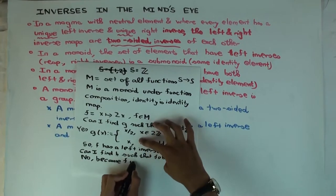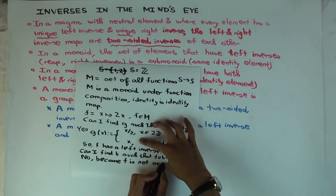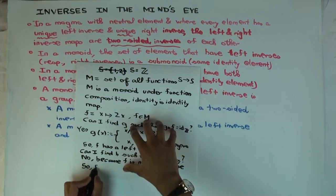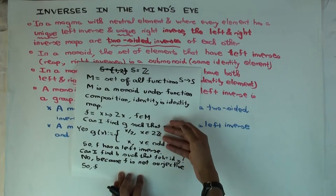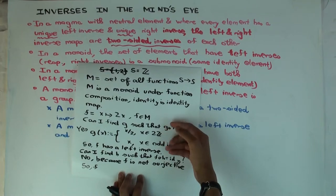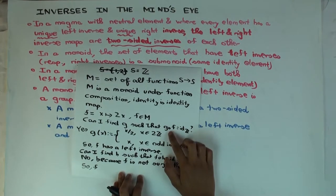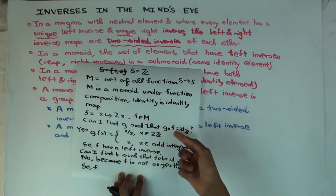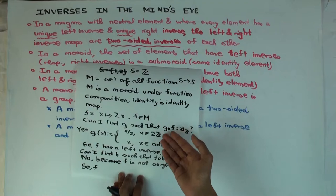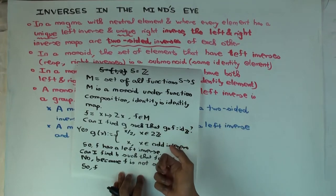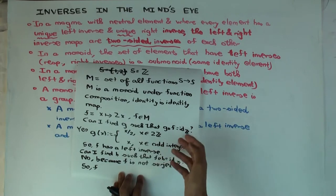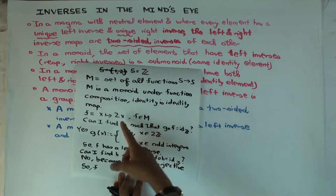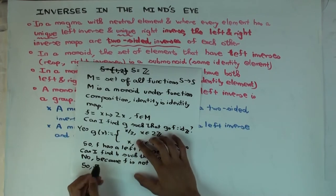The reason f is not right invertible is that it's not surjective. And the reason it was left invertible is that it's injective — if f were sending two different things to the same thing, there would be no hope of composing and then separating them again. So injective things can be inverted on the left, and surjective things can be inverted on the right. This particular function is injective but not surjective — that's why it's left invertible but not right invertible.